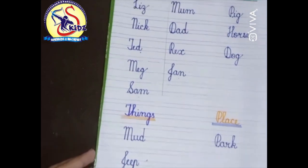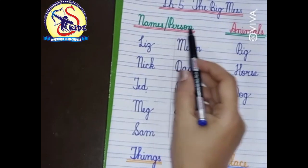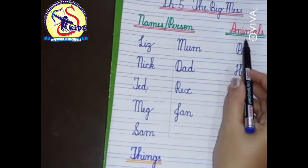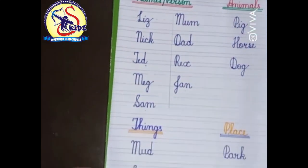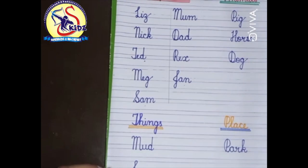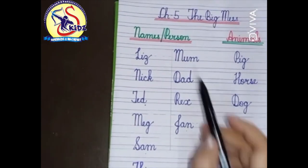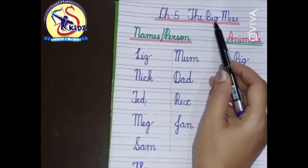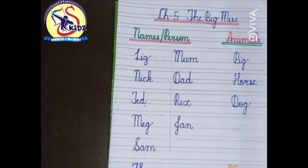So kids, this was the exercise: Names, Person, Animals, Things and Place from Chapter Number 5, The Big Mess. So children, do this exercise on your copy. Bye. Take care.